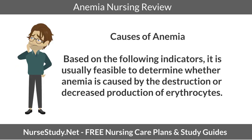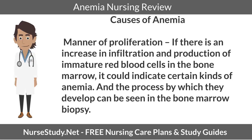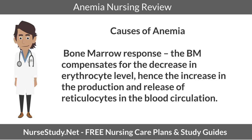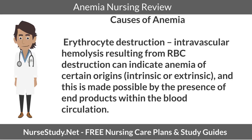On causes of anemia, based on the following indicators it is usually feasible to determine whether the anemia is caused by destruction or decreased production of erythrocytes. Manner of proliferation: if there is an increase in infiltration and production of immature red blood cells in the bone marrow, it could indicate certain kinds of anemia, visible in a bone marrow biopsy. Bone marrow response: the bone marrow compensates for the decrease in erythrocyte level through increased production and release of reticulocytes. Erythrocyte destruction: intravascular hemolysis resulting from RBC destruction can indicate anemia of intrinsic or extrinsic origins, made possible by the presence of end products within the blood circulation.